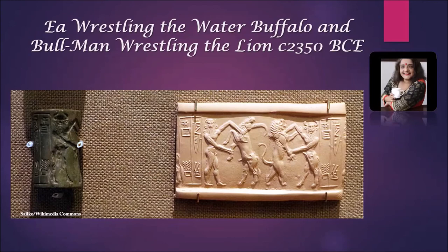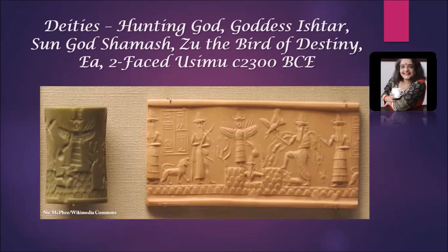Wrestling between man, god, animal, half-animal, half-human, and another strong animal — these are very important motifs. Lions, buffaloes, and bulls were very important animals for the Sumerians and ancient Mesopotamians in general, and they were also important for the Akkadians. This next cylindrical seal and its wet clay impression show the deities of ancient Mesopotamia, which continued from the Sumerian civilization into the Akkadian Empire period.